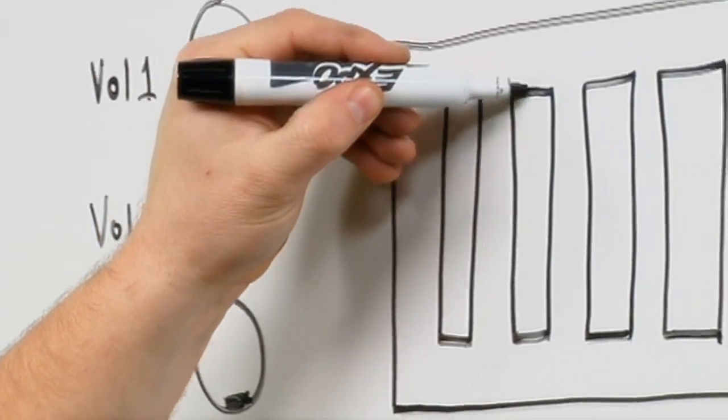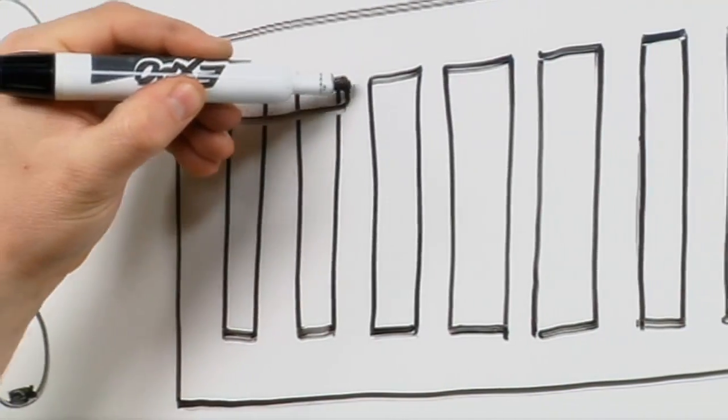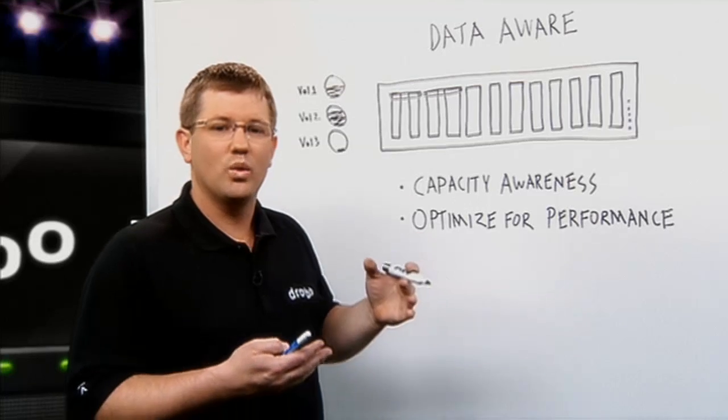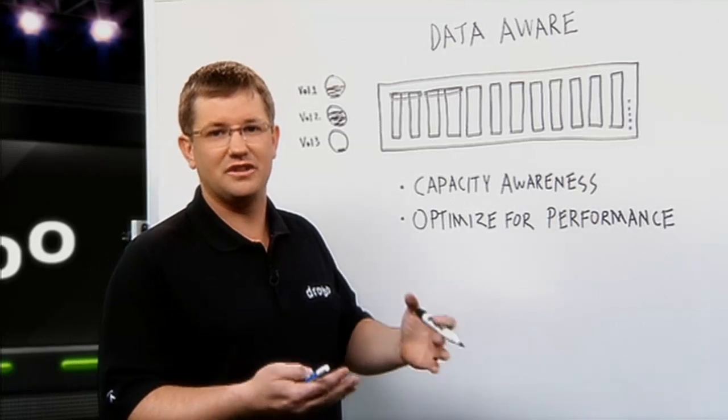So what Drobo will do is it will carve a small mirror off the top of the drives, which is a better format for transactional data.